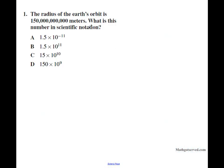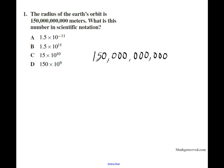Number one says the radius of the Earth's orbit is 150 billion meters. What is this number in scientific notation? I have a tutorial on scientific notation that you can watch to go over more practice. So let's go over this problem. We have 150 billion, and we want to write this in scientific notation. Scientific notation requires there to be only one number to the left of the decimal point.